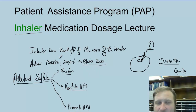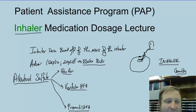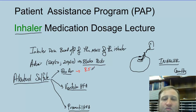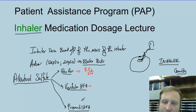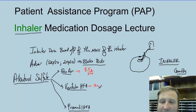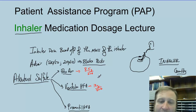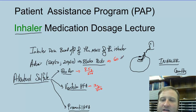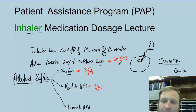Each one of these has a different quantity or a different mass. The quantity per inhaler for ProAir is going to be 8.5 grams per inhaler. Ventolin is going to be a mass of 18 grams per inhaler. And then the blister packs — there are 60 blister packs per Advair inhaler.